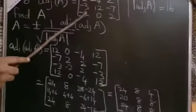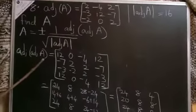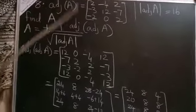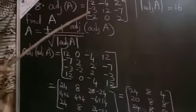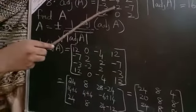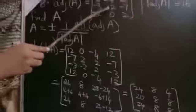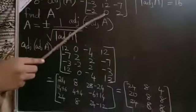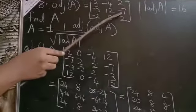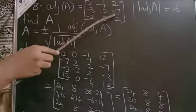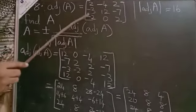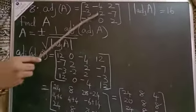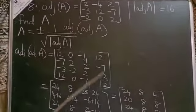Now we compute adjoint of adjoint A using the shortcut method. The central number in each row is taken. The matrix elements are: 12, 0, -4, 12; next row: -7, 2, 2, -7; next row: -3, -2, 2, -3. This is the arrangement for the first row — it will not be simplified at this stage.